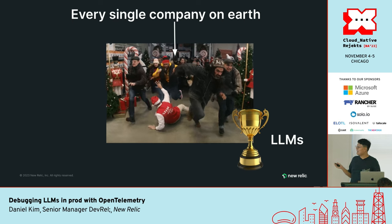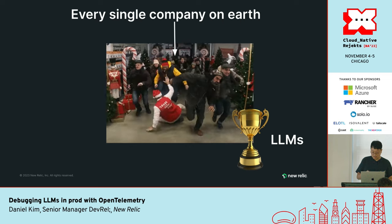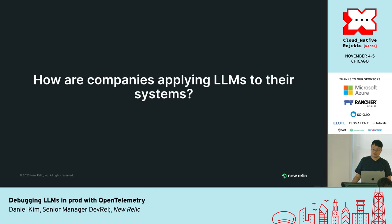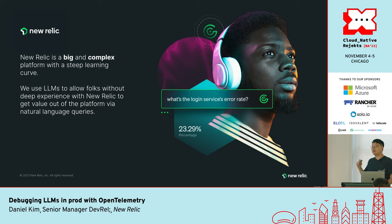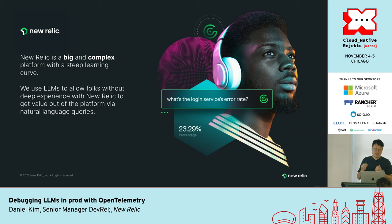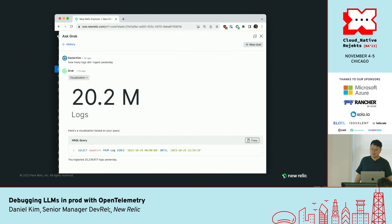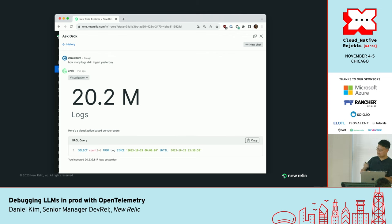That is a thing that I think almost every one of my friends who work in tech have faced. So what are some of the ways that companies are applying LLMs to their systems currently? I can talk about how New Relic, my company, is integrating LLMs into our systems. Our platform is extremely big and complex and has a pretty steep learning curve — you need to know our proprietary querying language and our UI to get data out of it. But we can leverage LLMs to allow folks without deep experience to get value out of our platform just using natural language queries. I can ask our generative AI assistant, Grok, how many logs I ingested yesterday without having to navigate four different screens, and it returns the answer in a chat format.